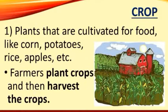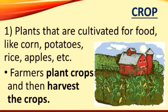The word crop refers to plants that are cultivated for food, like corn, potatoes, rice, apples, etc. Farmers — those are people who work in the area of agriculture — plant crops. They put the seeds into the ground and wait for the plants to grow.